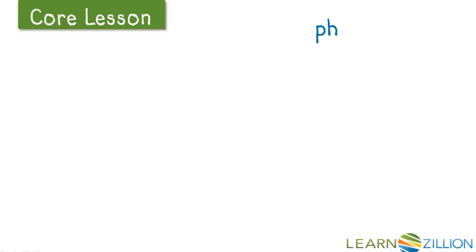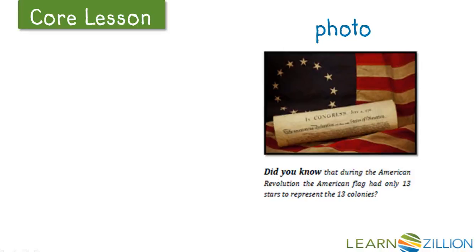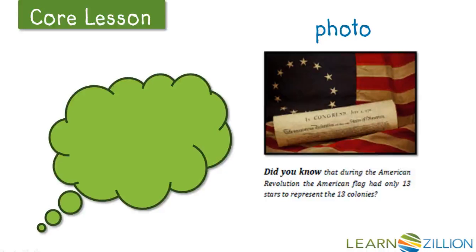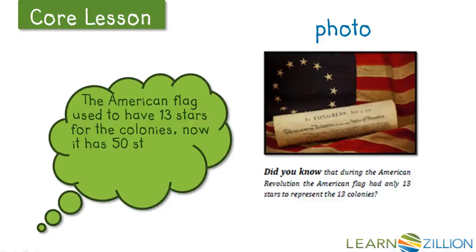Let's practice one more time by making an observation from this photo. I see a flag in this photo. It has red and white stripes and stars like the American flag, but not as many stars as the flag does now. This makes me curious to read this article. By reading the caption, I can discover that during the American Revolution, the American flag had only 13 stars to represent the 13 colonies. So the American flag used to have 13 stars for the 13 colonies, and now it has 50 stars for all the states.